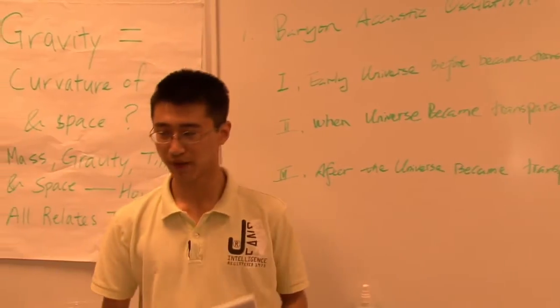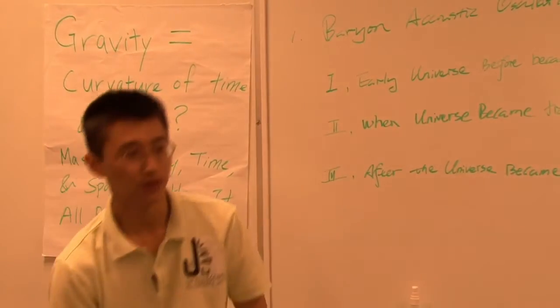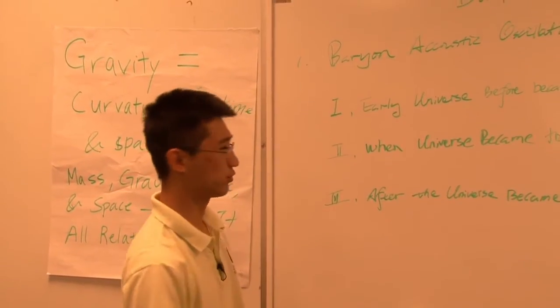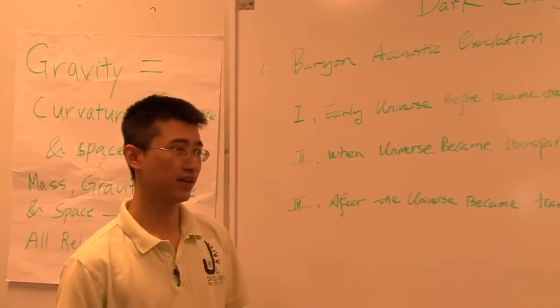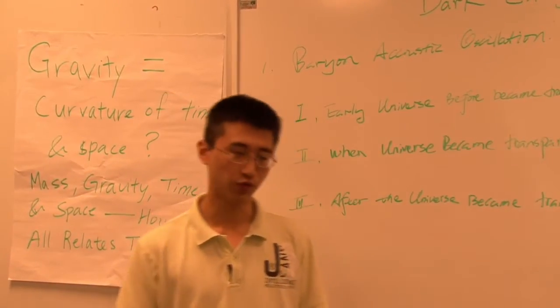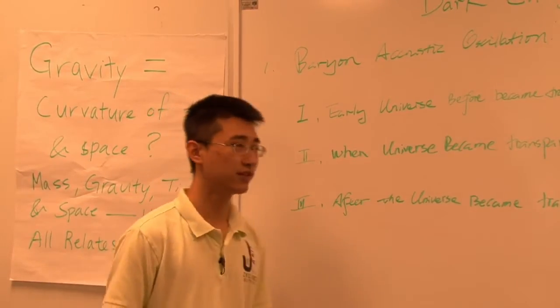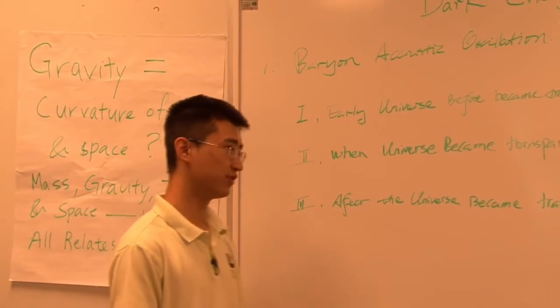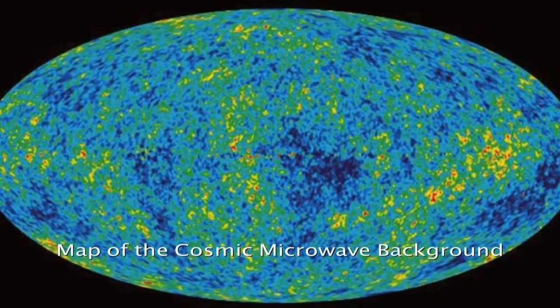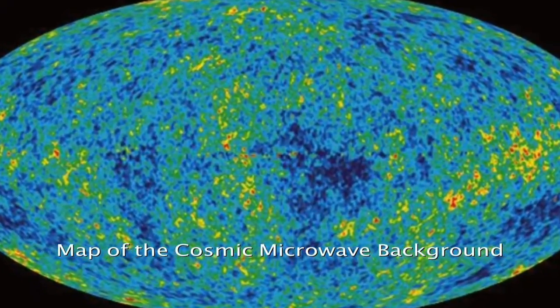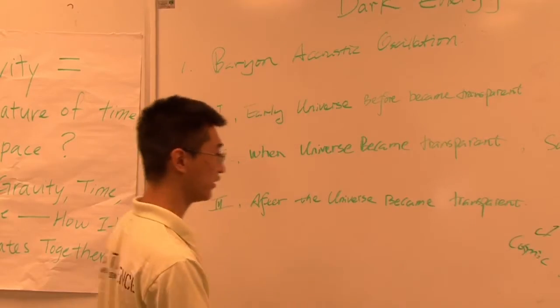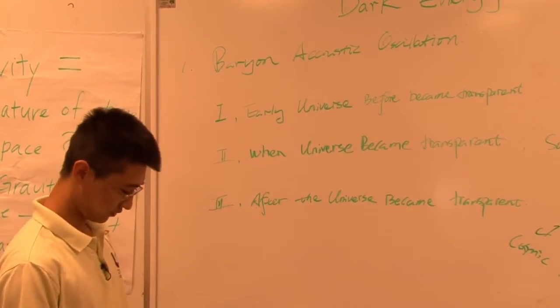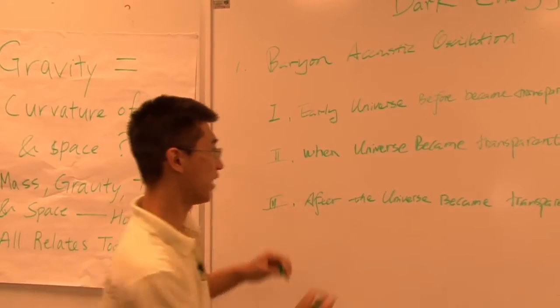As the universe is expanding, it gets cooler and cooler. Eventually, the universe will be cool enough that the protons can capture the electrons to form neutral hydrogen. Once neutral hydrogen is formed, the light can travel past these neutral hydrogens. We all know there is cosmic microwave background radiation. It's the light that was emitted exactly during this time. This is when the universe becomes transparent.